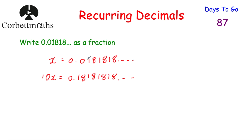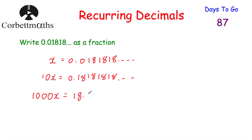Now let's go back to our x and think of another number we can multiply by to get the 1818... part after the decimal point. Multiplying by 100 would move digits two columns left, giving 1.81818... — but I want the 1818 after the decimal point. So I'm going to multiply by 1000. That moves all digits three columns to the left, giving 1000x equals 18.181818... and so on.